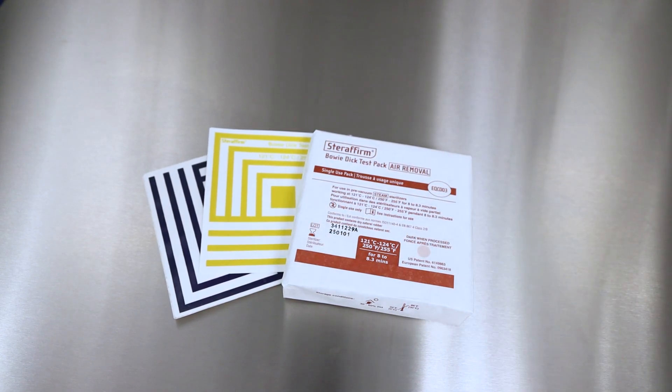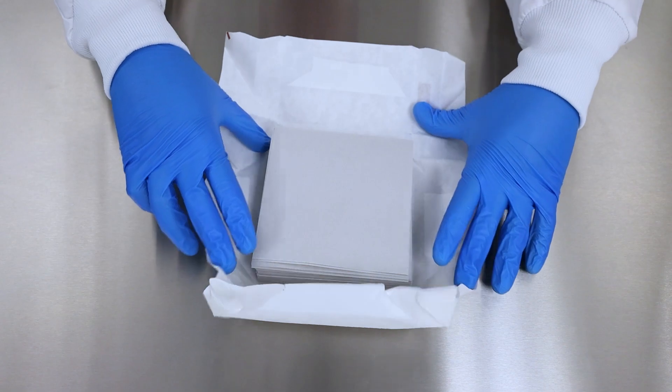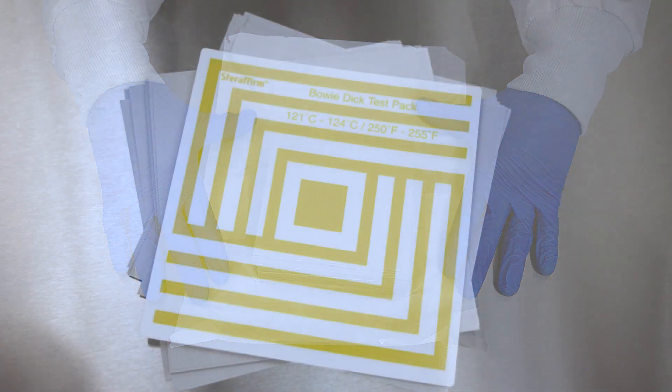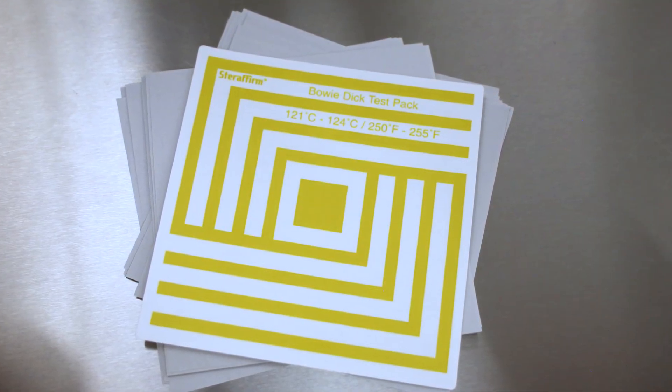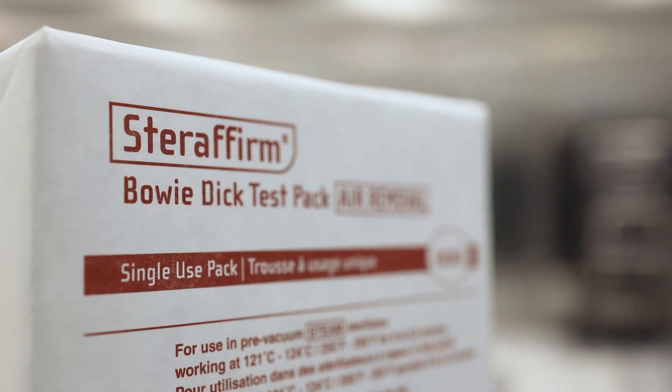A test pack consists of a set of air removal and steam penetration barriers. In the center of each pack is a chemical indicator sheet. Each test pack is preassembled and intended for a single use.